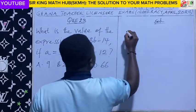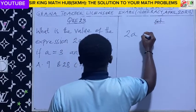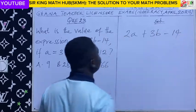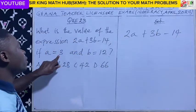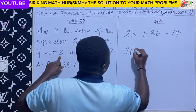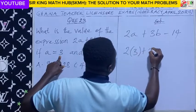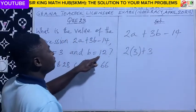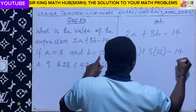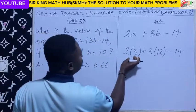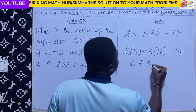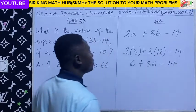We have our expression here: 2A plus 3B minus 14. We know the value of A to be 3, so let's substitute 3 in place of A. Plus, we know the value of B to be 12, and then minus 14. 2 times 3 is 6. 3 times 12 is 36, minus 14.